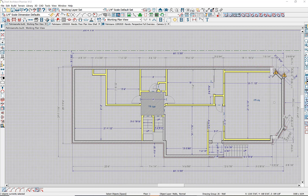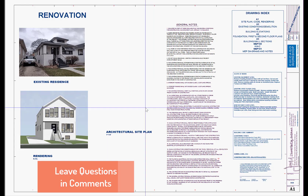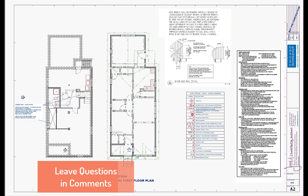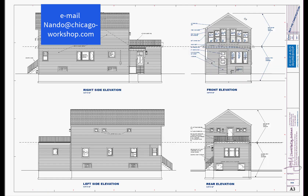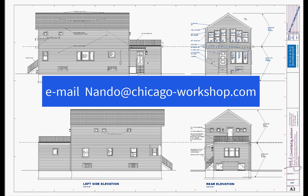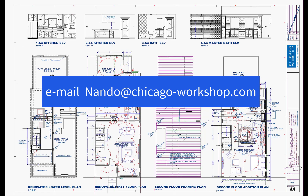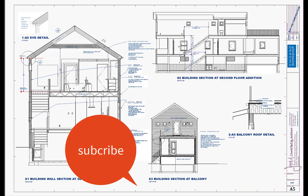That's a bit of a long-winded explanation, but you get the idea — how to change your wall types using the wall type menu in Chief Architect. Don't forget to leave questions in the comments, or email us with questions or suggestions. Please subscribe on YouTube and email us to join our email list — we'll notify you of fresh content as soon as it's created.